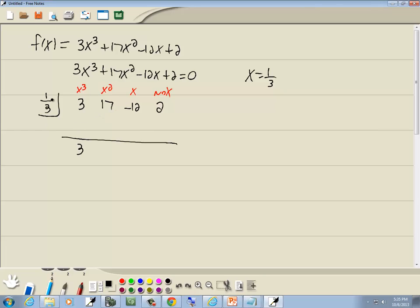Now we'll go through a series of adding, multiplying over and over until we're done. 3 plus nothing is 3. Then we multiply the number in the box by the number you just got, 1 third times 3 is 1. Then we add 17 plus 1 is 18. Multiply 1 third times 18 is 6. Add negative 12 plus 6 is negative 6. Multiply 1 third times negative 6 gives us negative 2. And then add 2 minus 2 gives us 0. Now 0 as our remainder means we found an answer.